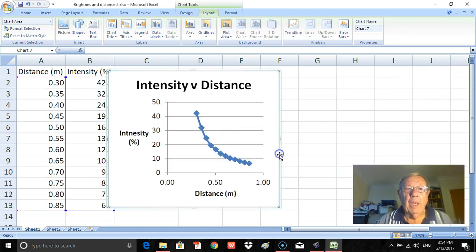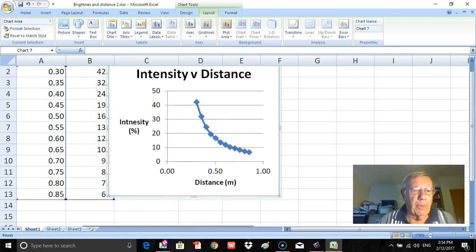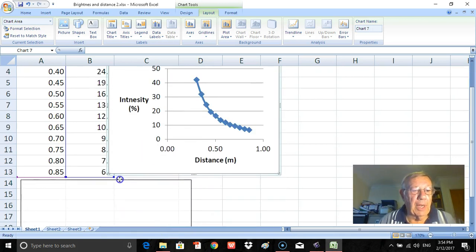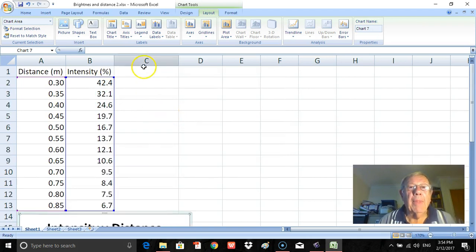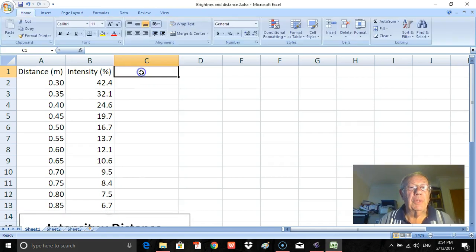Now the next thing that I'm going to try in order to get a straight line, in fact, is going to be 1 over the distance squared. So what I'll do is I'll just move this down and out of the way, and I will create in here another column which is 1 over distance squared. So I'll put in a label.